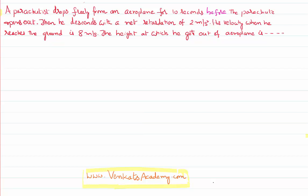The problem is like this: there is a parachutist who drops freely from an airplane for 10 seconds before the parachute opens up. That means for 10 seconds he has fallen like a freely falling body. Then at the 10th second he switches on his parachute and it opens. He then descends after opening the parachute.